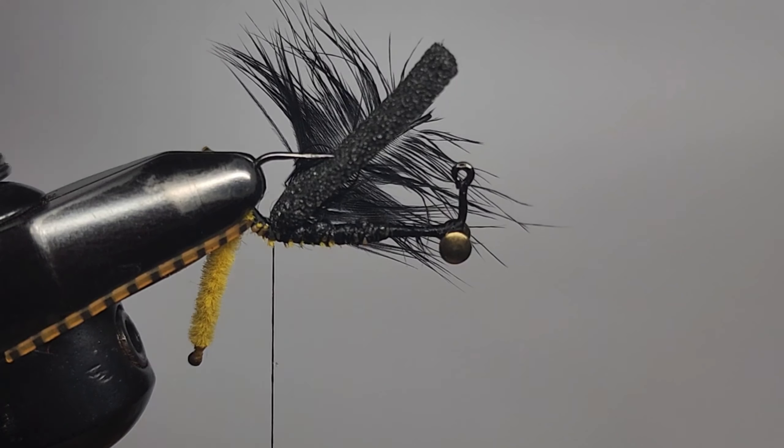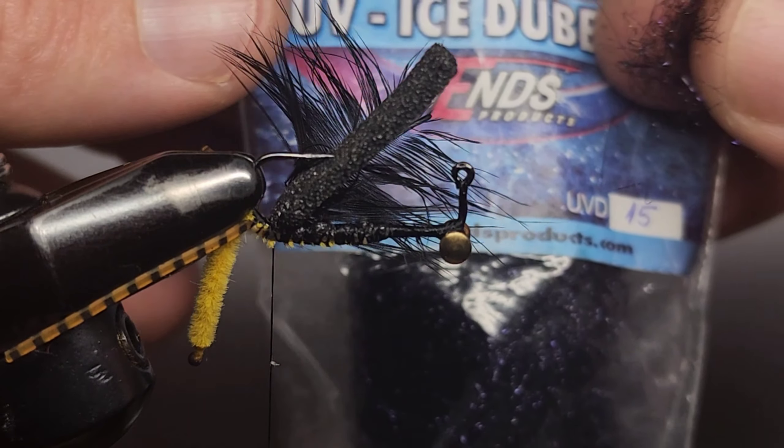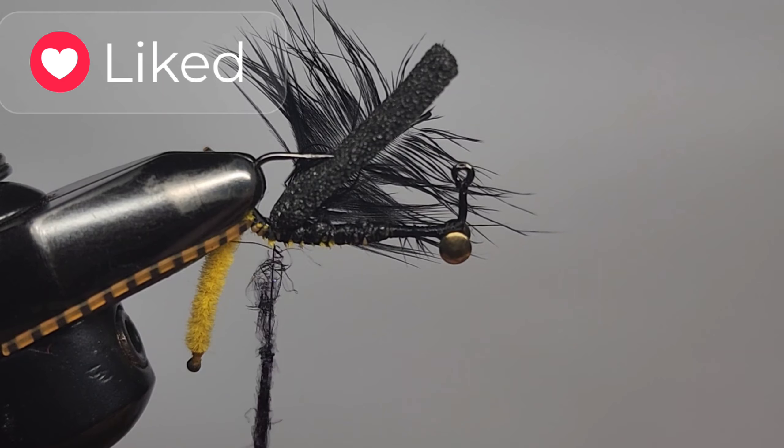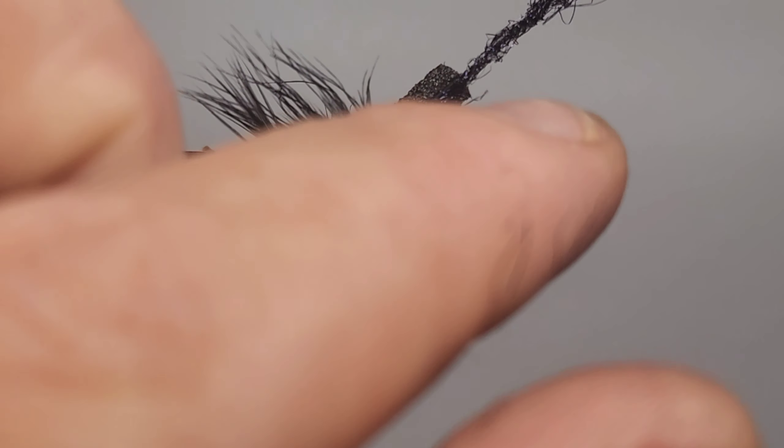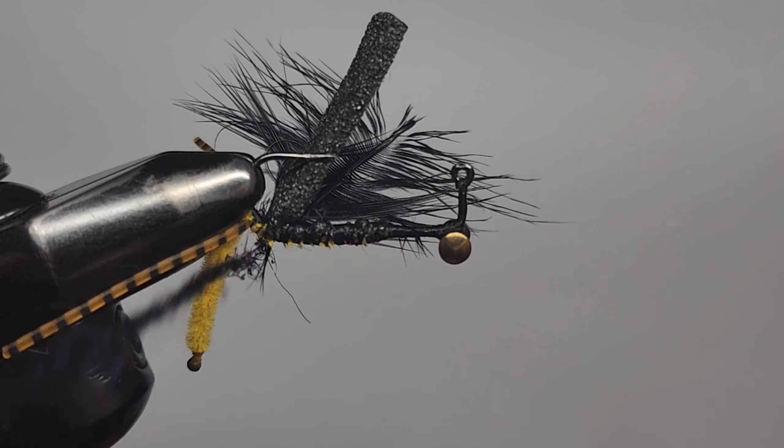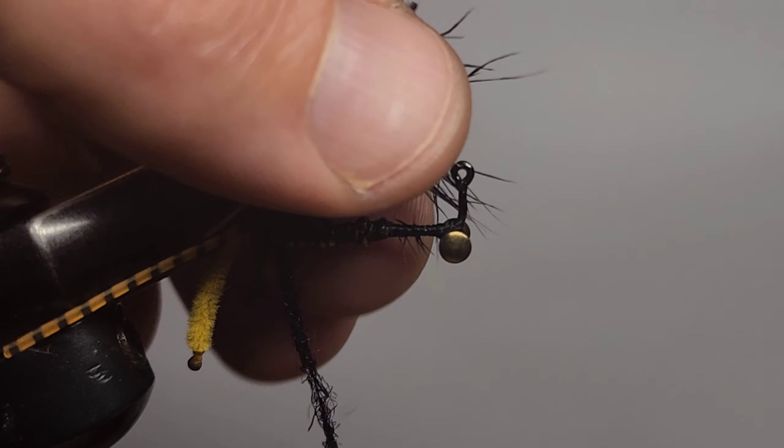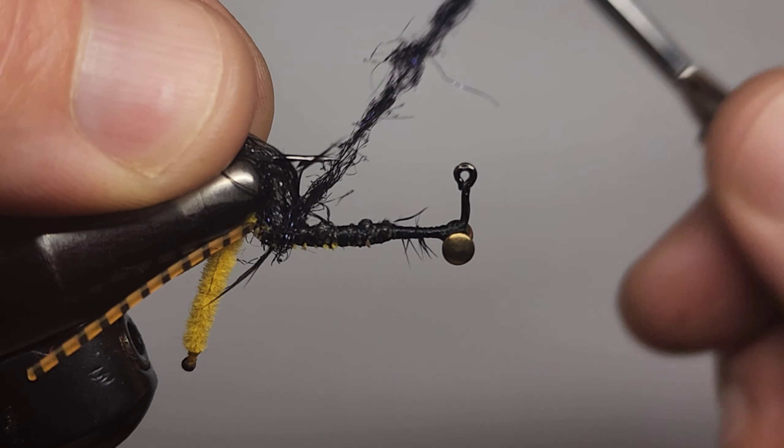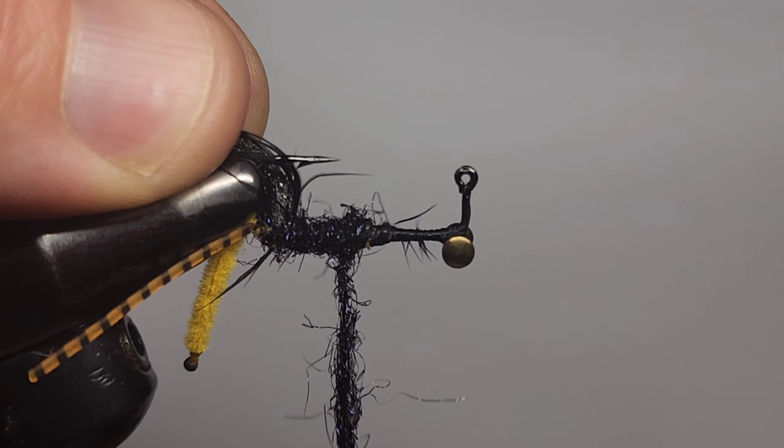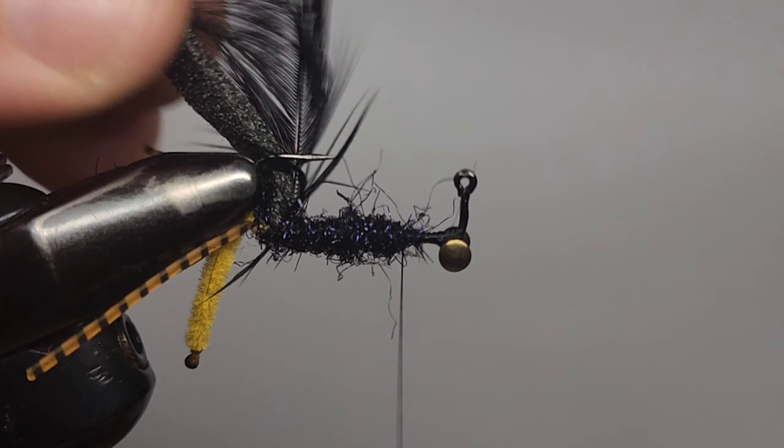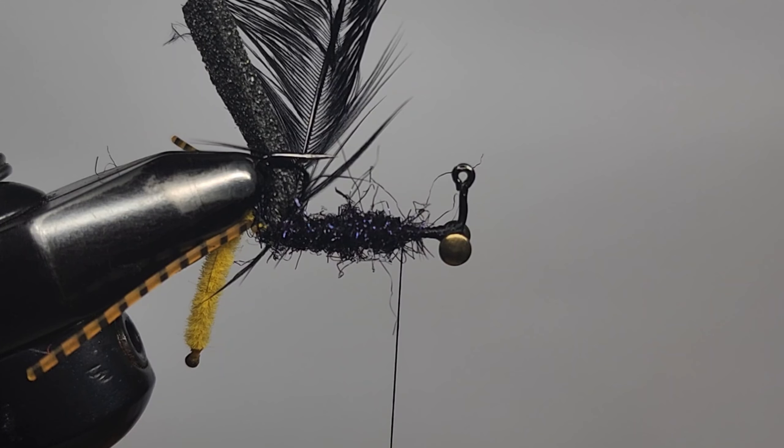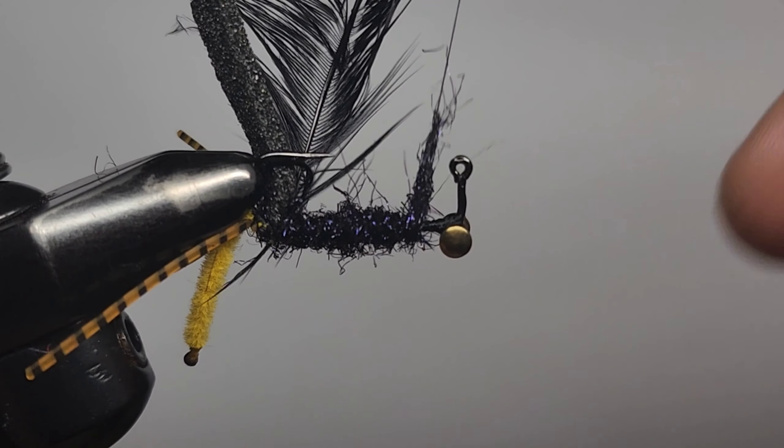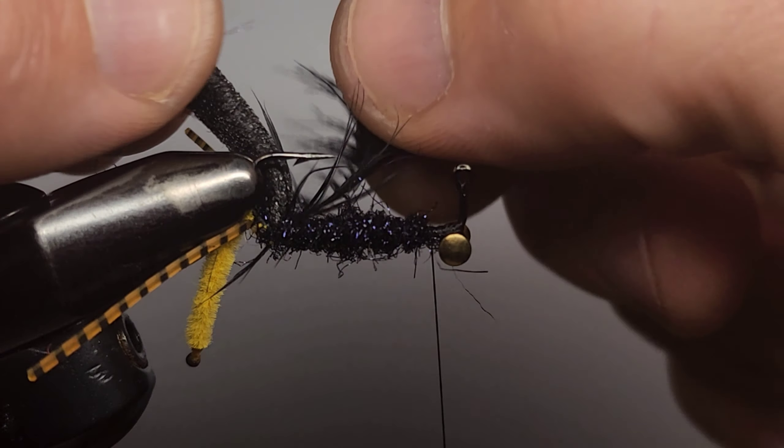Make a dubbing noodle with some UV Ice Dub in black. And we'll just start at the back behind that foam, wrapping that Ice Dub in there. And then we'll bring it in front of our foam and our partridge flank. And just hide all those thread wraps down there. Just need a little bit more.